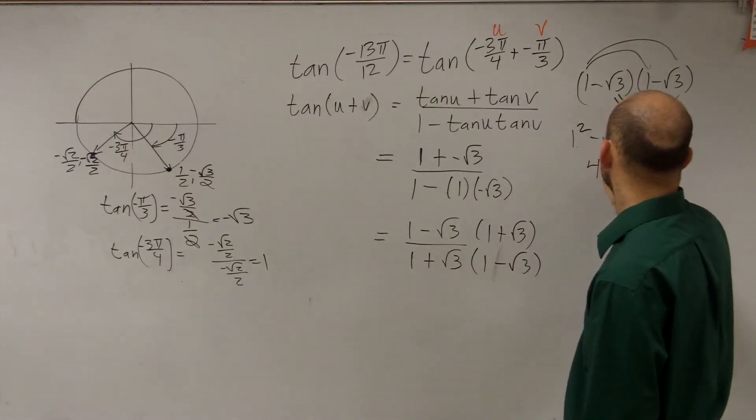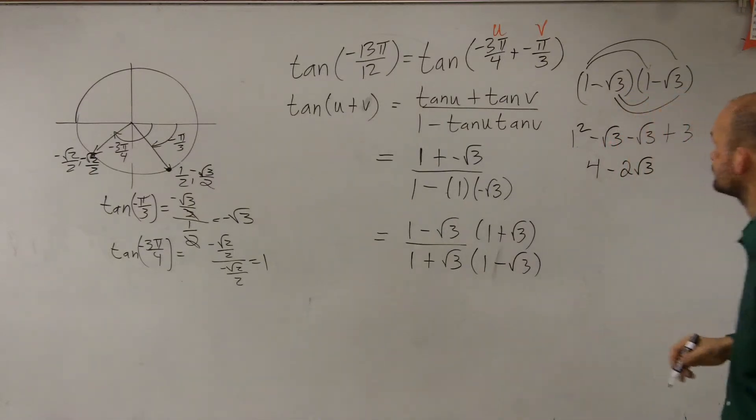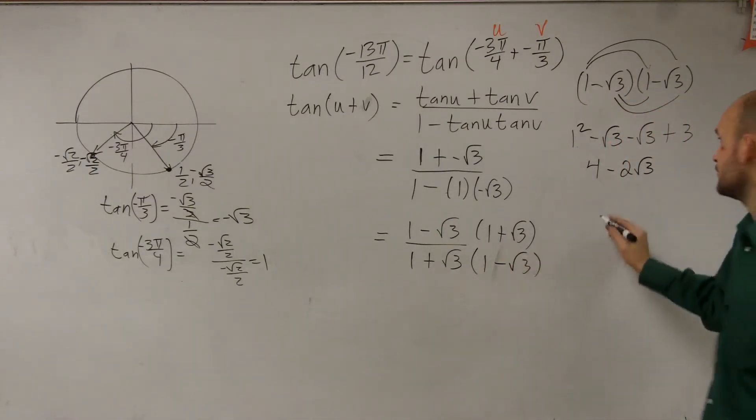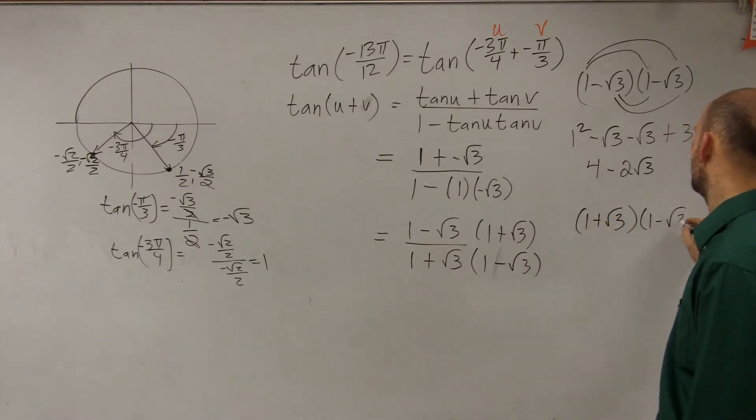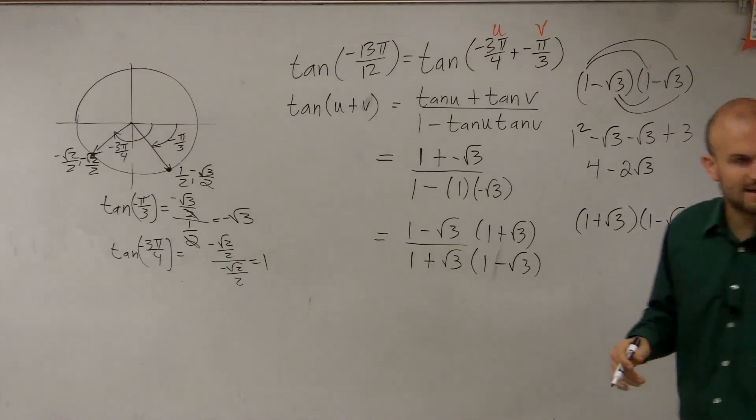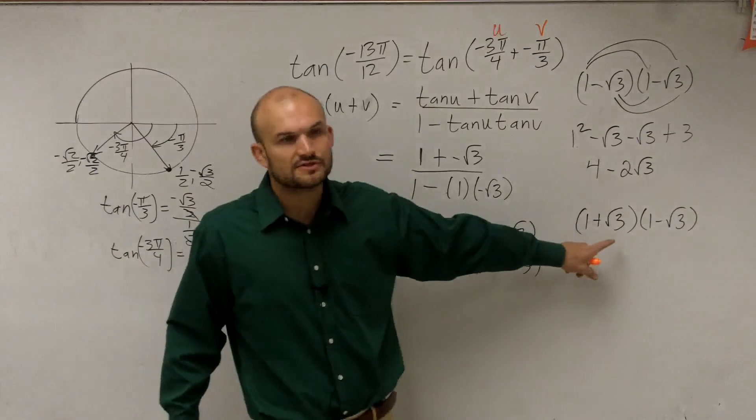Therefore, my answer here is 4 minus 2 square root of 3. Then we have here a difference of two squares. Remember, a squared minus b squared equals a plus b times a minus b.